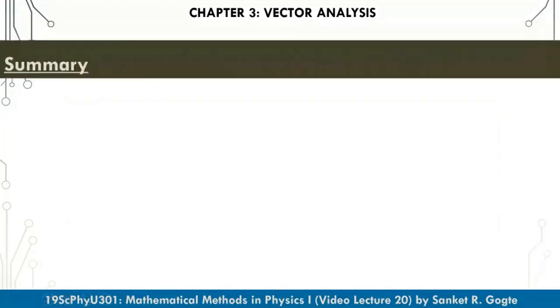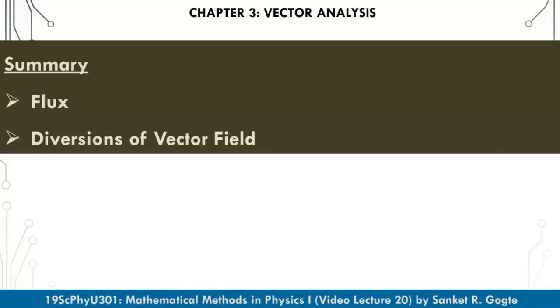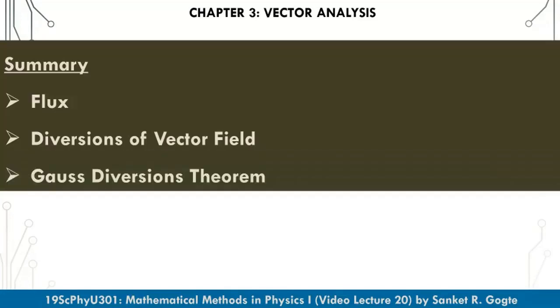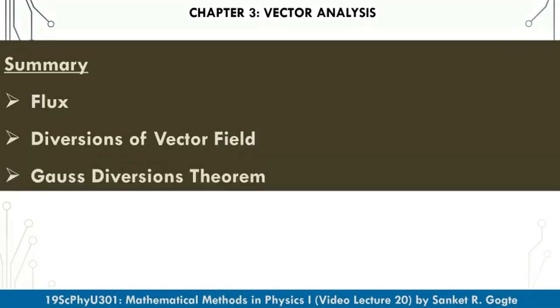To summarize this lecture: we defined flux as the integral of V dot dS for both open and closed surfaces. We then defined divergence of a vector field and established that its physical significance is flux per unit volume through a closed surface at the given point. Finally, we discussed Gauss's divergence theorem, which allows conversion of a volume integral of divergence into a closed surface integral of the vector field.